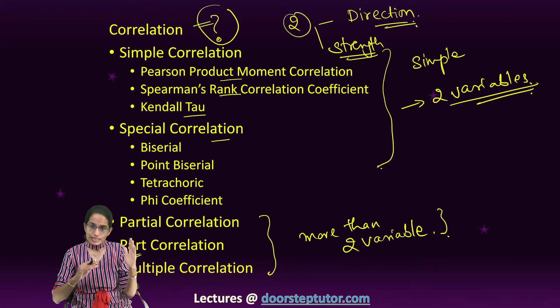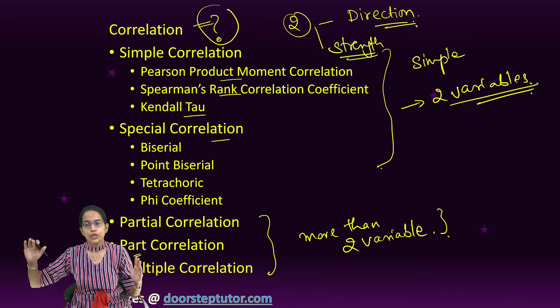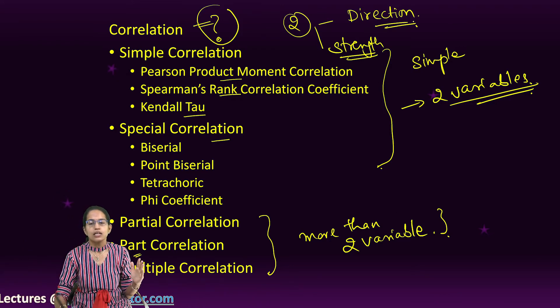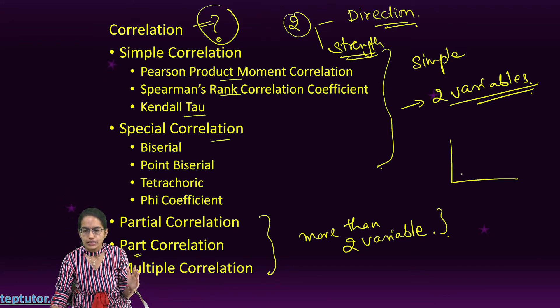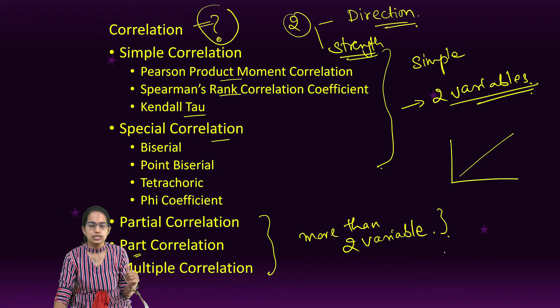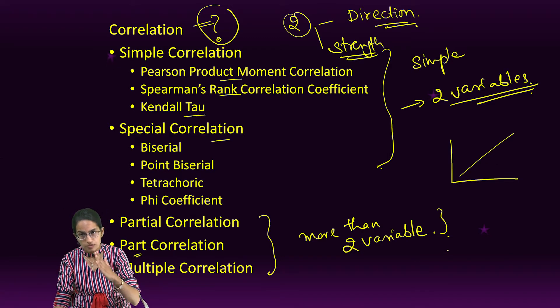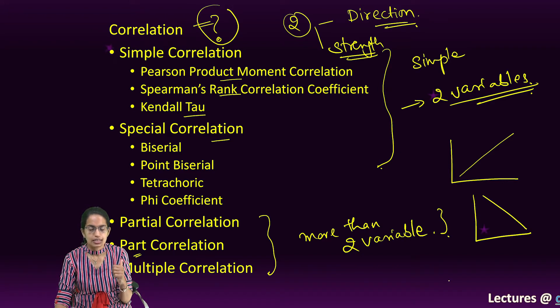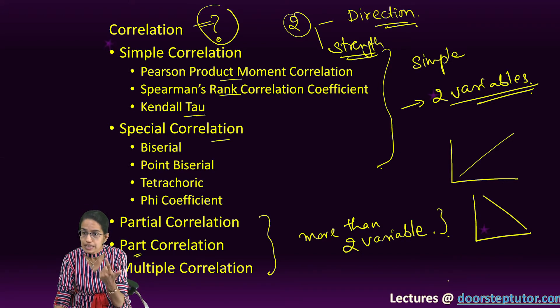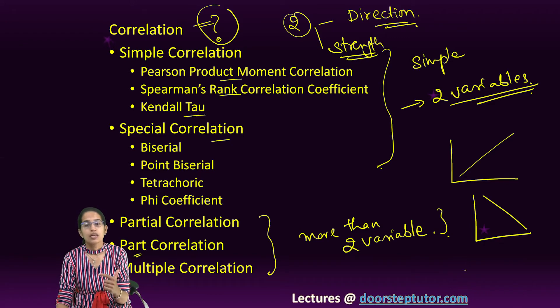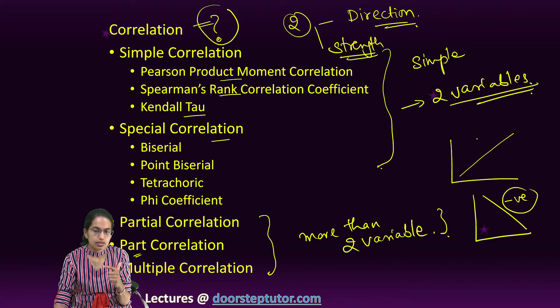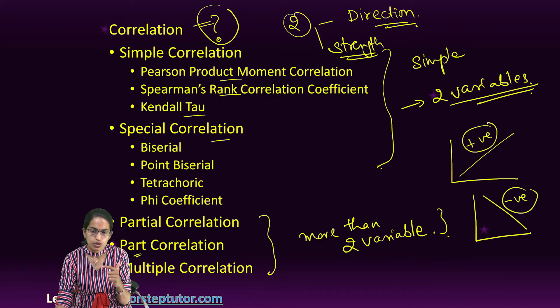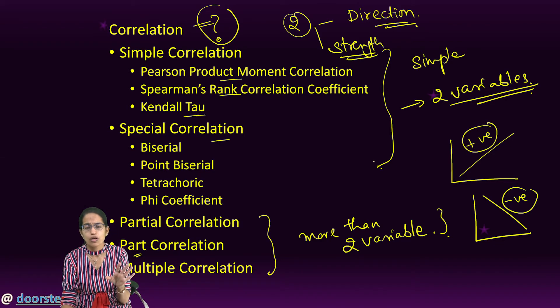What is direction? As variable one increases, variable two increases - that means there is a positive direction. If one variable increases and the other decreases, that means there is a negative relation. This is an example of negative correlation, this is an example of positive correlation, and then there can be no effect.